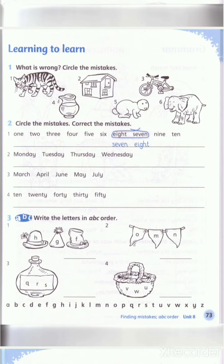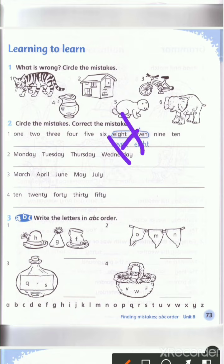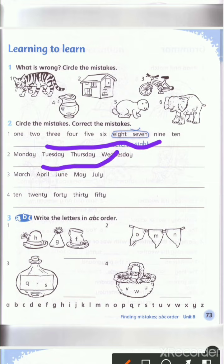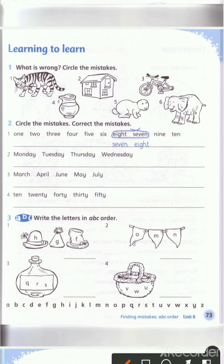Now please move to page number 73. This page is homework. بس بدي أفرجيكم كيف طريقة الحل عشان تعرفوا. Number one: circle the mistakes and correct them. هلأ بدك تشوف وين الخطأ بالترتيب — دائماً وأبداً the numbers لازم يكونوا مرتبين. The days of the week and months — لازم يكونوا على الترتيب.